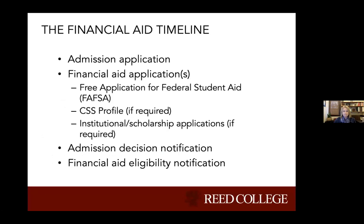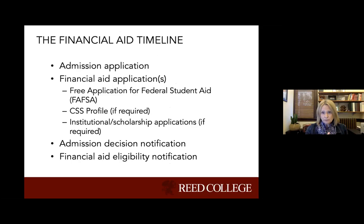Looking at the timeline: you're going to apply for admission to various colleges and at about the same time you're also going to be completing the financial aid applications. All schools are going to require the Free Application for Federal Student Aid, or FAFSA, if you're applying for need-based aid. Some schools may require an additional application - their own institutional application or the CSS profile. You've applied for admission, you've applied for financial aid, then you're notified of your admission decision, and if you've been admitted, shortly thereafter you receive notification of your financial aid eligibility.